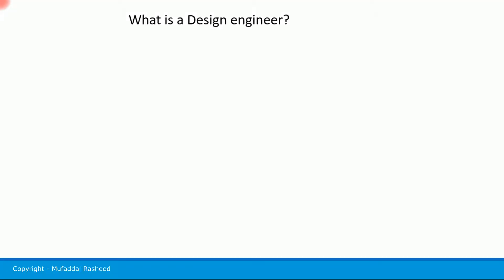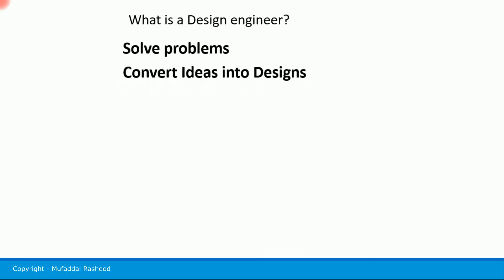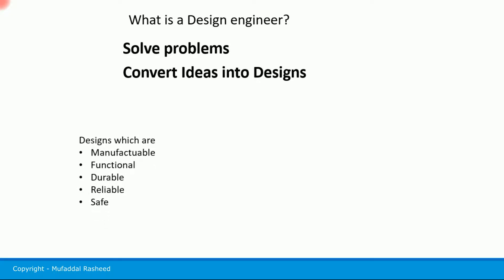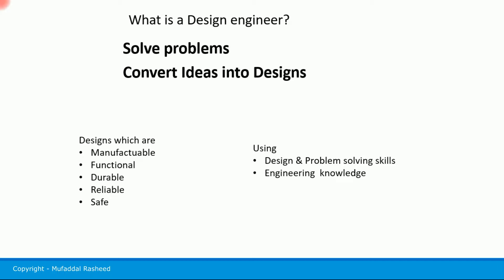What exactly is a design engineer? At the most basic level, a design engineer solves problems. Like any engineer, a design engineer is supposed to solve problems and convert ideas into designs which are manufacturable, functional, durable, reliable, and safe, using the available design and problem-solving skills and engineering knowledge they possess.